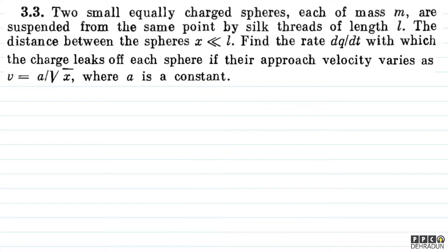Welcome students, let's have a look at this beautiful problem from Irodov. The question says: two small equally charged spheres, each of mass m, are suspended from the same point by silk threads of length l. The distance between the spheres x is much much less than l. Find the rate dq/dt with which the charge leaks off each sphere if their approach velocity varies as v = a/√x, where a is a constant.